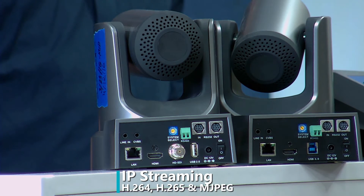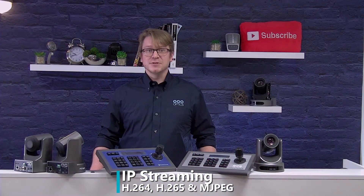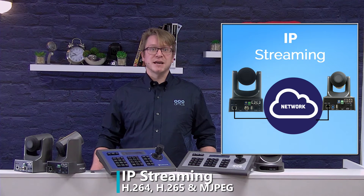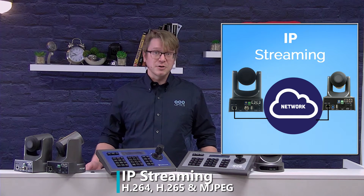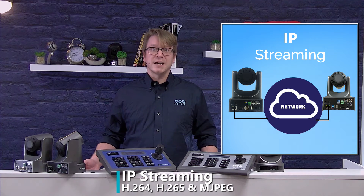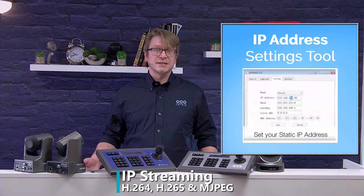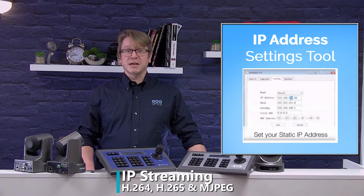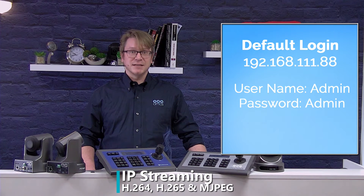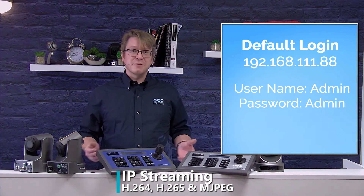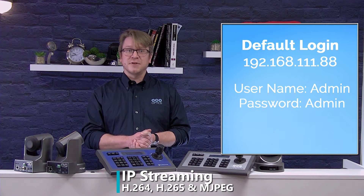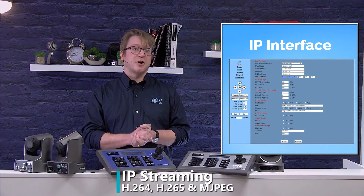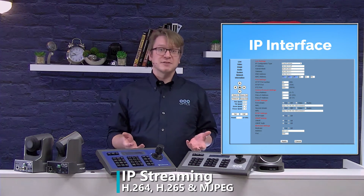PTZOptics cameras include IP streaming capabilities with both video and audio. To use these capabilities, the camera must be connected to your network. Once connected, you can log into the device via the IP address. You can download our free IP address setting tool to easily search for your camera on your network. The default username and password is admin and admin. Once you've logged into the camera's GUI interface, you can browse to the video tab to enter your RTSP or RTMP streaming credentials.